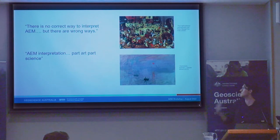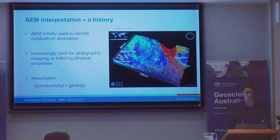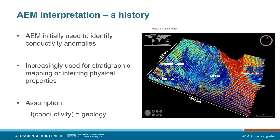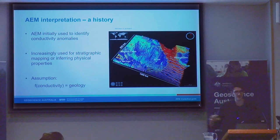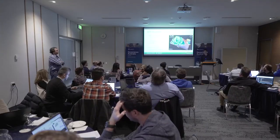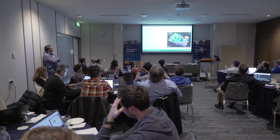Where you can make out the broad features of what's happening, but none of the detail. AEM initially was a bit of a bump-finding tool, looking for conductivity anomalies. But as we improved our methods, both in the hardware and in the inversion, we started pushing it more and more and using it for things like stratigraphic mapping or inferring physical properties. But a lot of this is really underpinned by the assumption that somehow you can map your conductivity onto geology. That is definitely not always easy, and it can't be done everywhere.